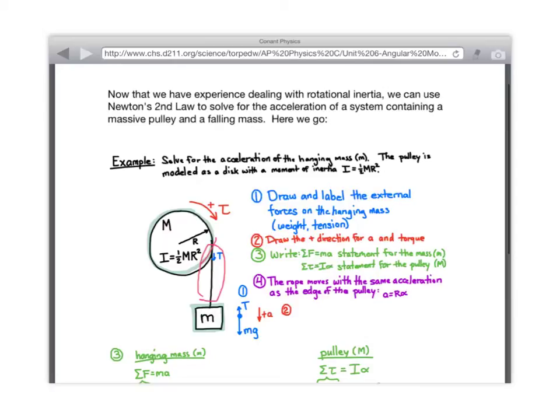Tension and weight. Are tension and weight equal? No. Which one has to be bigger? Weight. Why does weight have to be bigger? It's accelerating. Because if it weren't bigger, it wouldn't accelerate. All right, good.